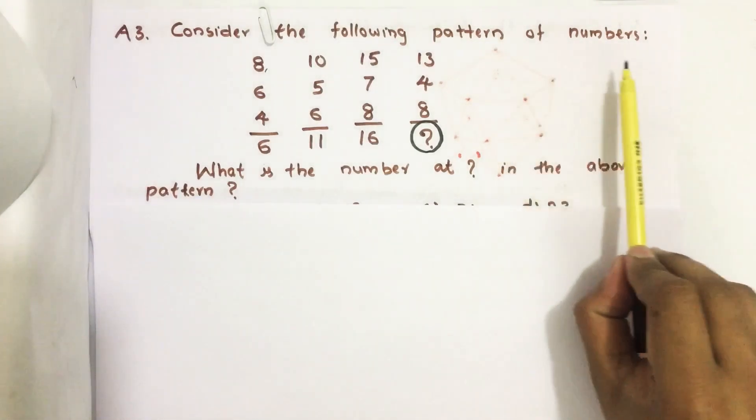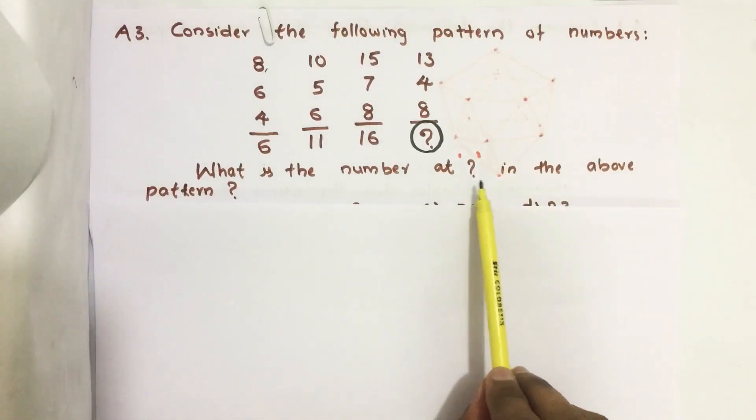Consider the following pattern of numbers. What is the number at the question mark in the above pattern?